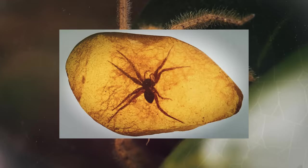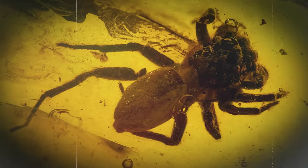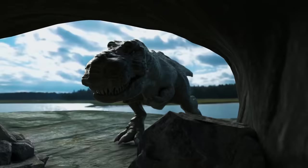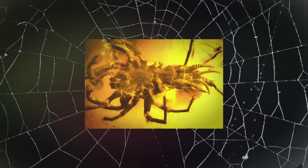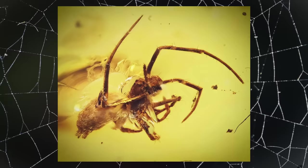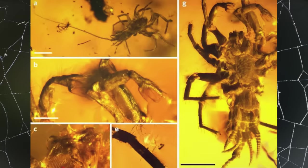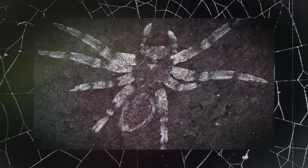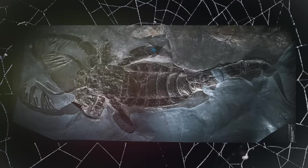Despite these challenges, some spider fossils have been discovered, especially in amber deposits. Amber is a fossilized tree resin that can trap and preserve small organisms, including spiders, in remarkable detail. These amber fossils provide valuable insights into the ancient diversity and morphology of spiders. Additionally, some spider fossils have been found in sediments, but they are generally less common compared to fossils of organisms with hard exoskeletons or bones.